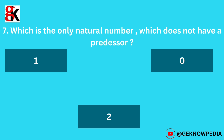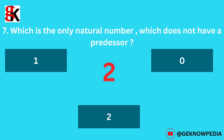Seventh question. Which is the only natural number that does not have a predecessor? Options: 1, 0, 2. The correct answer is 1.